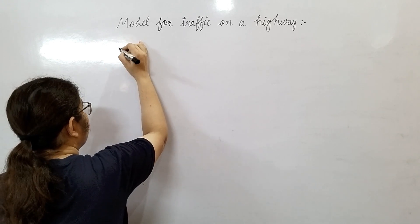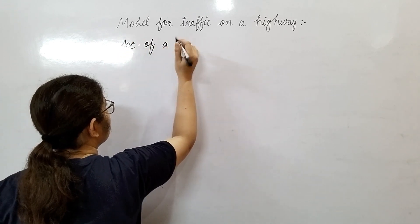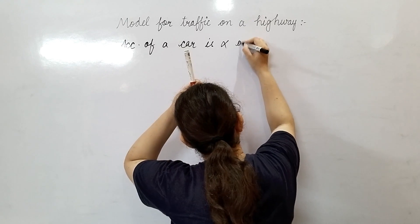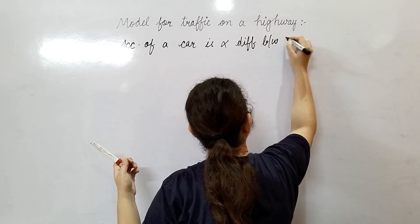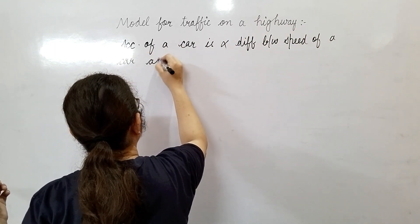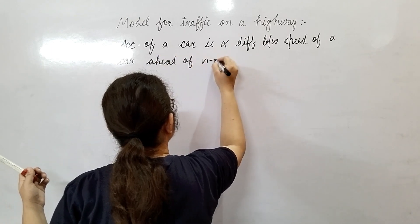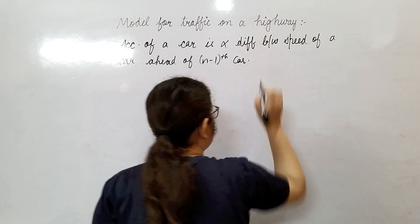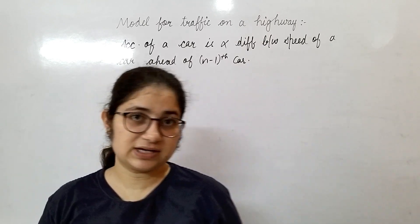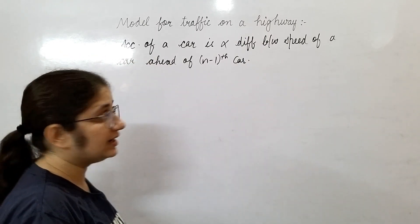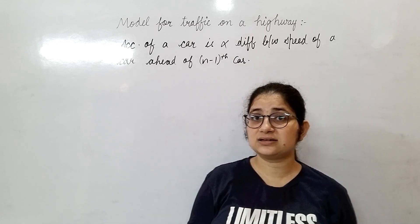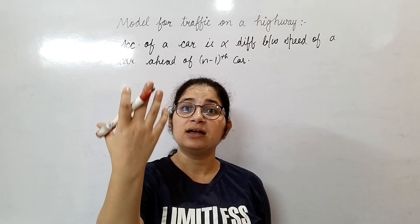What is the assumption? The acceleration of a car is proportional to the difference between the speed of a car and the car ahead — the nth car is ahead of the n minus 1th car. We are assuming that the acceleration of any car depends on the car that is ahead of it. So if you are considering the n minus 1th car, then the acceleration of that car will depend upon the car that is ahead of that car.